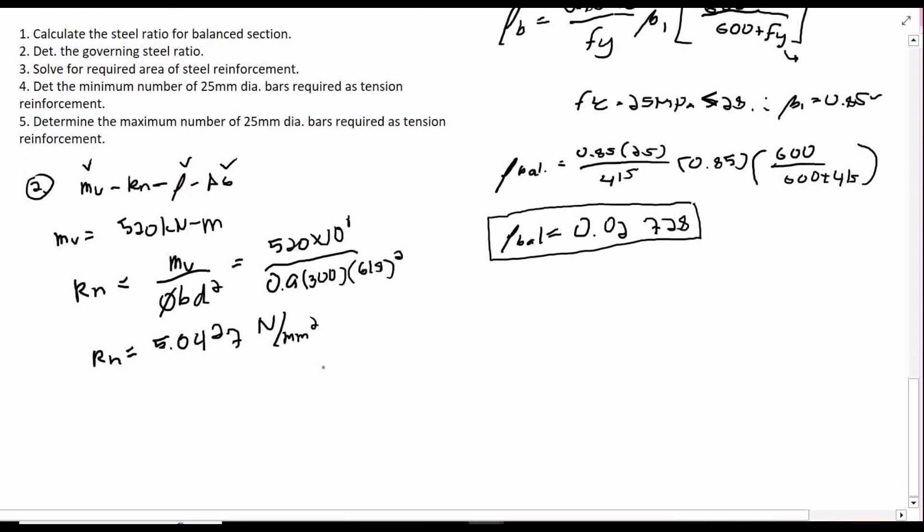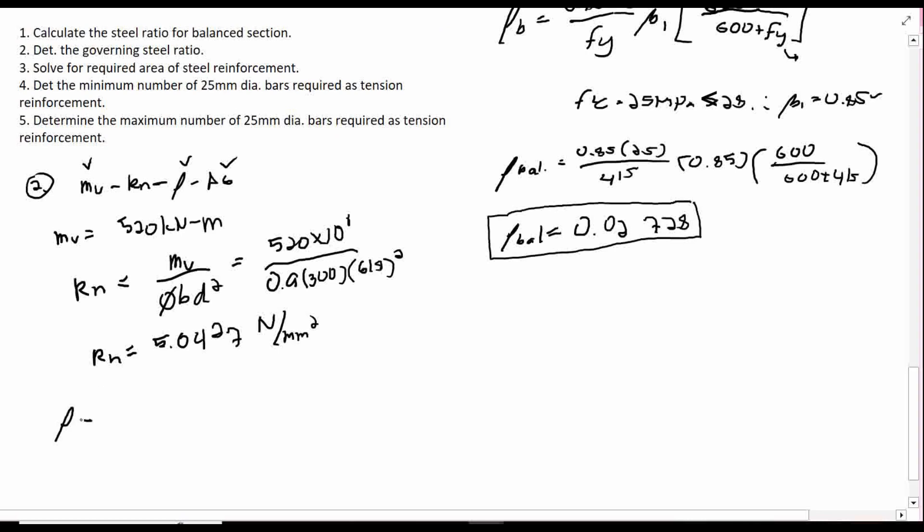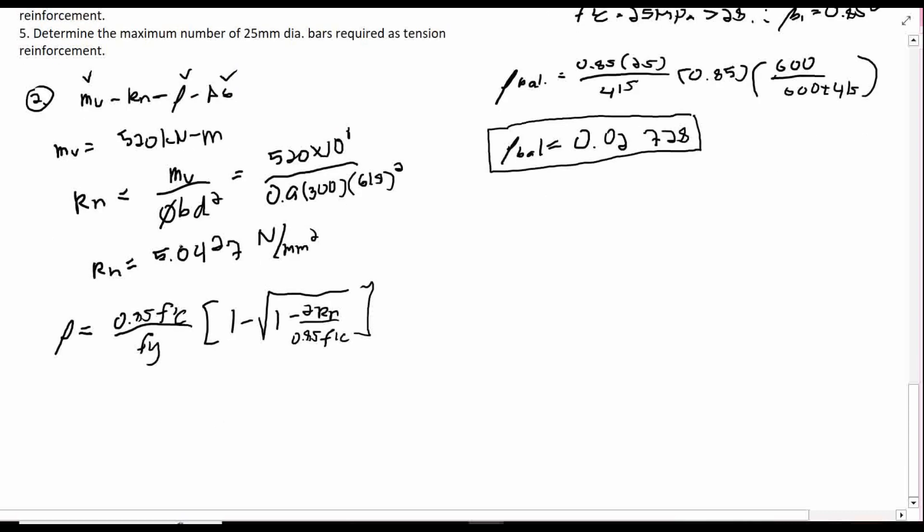We can proceed in solving our ρ. ρ is 0.85 F'C all over F'Y times 1 minus square root of 1 minus 2 R_n over 0.85 F'C. Substitute all values. So ρ is 0.85 of 25 over 415 times 1 minus square root of 1 minus 2 times 5.0427 all over 0.85 of 25. Our ρ is 0.01409.